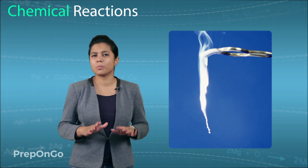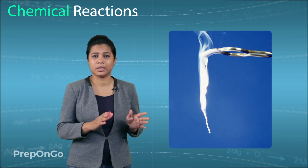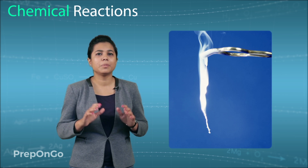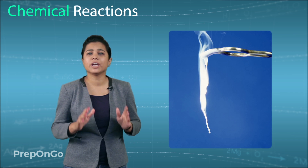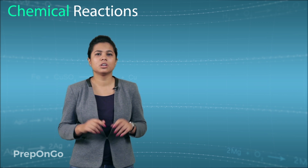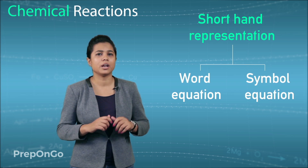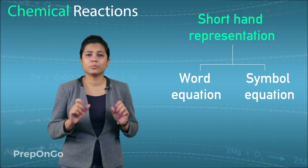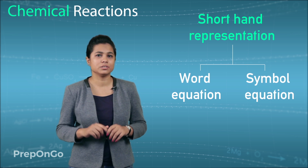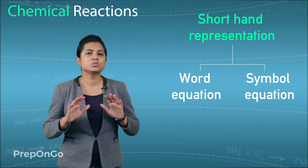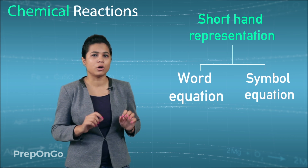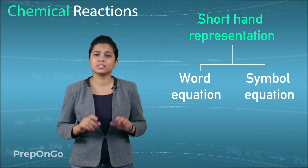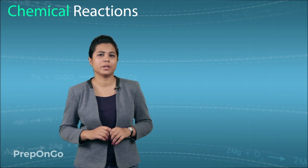Now a common person would simply say that magnesium was burnt with oxygen to produce magnesium oxide. But we are students of science and we have to learn many chemical reactions, so we need a shorthand representation. There are two ways to write these chemical reactions in the form of equations: the first is word form and the second is symbol equation.